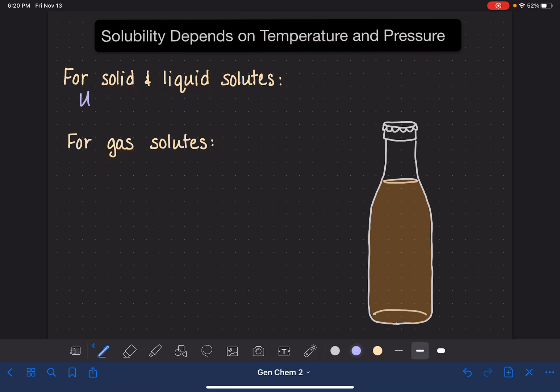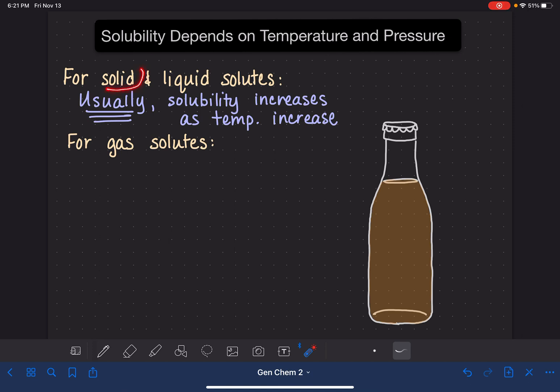This is unfortunately a very unpredictable and unreliable relationship. Usually, most of the time but not always, the solubility of a solid or liquid will increase as our temperature of solution increases. So typically, if we increase the temperature of a solution, this means we will be able to dissolve a greater quantity of a solid solute or a liquid solute. Again, this is only the case usually.